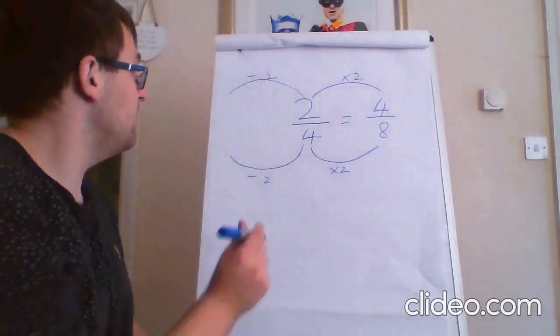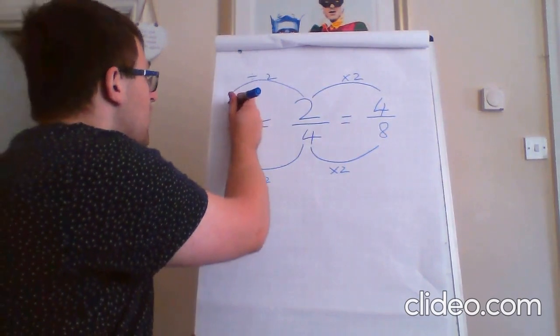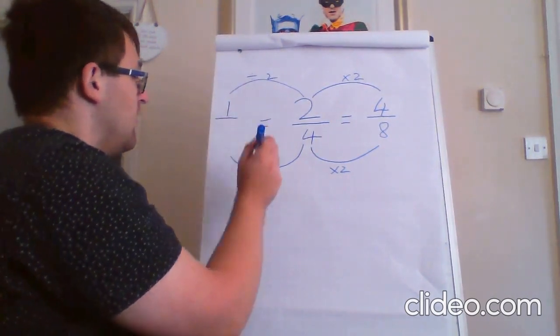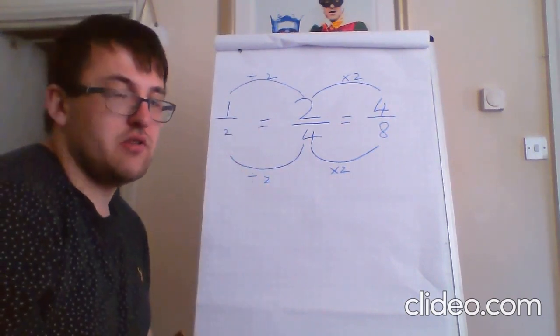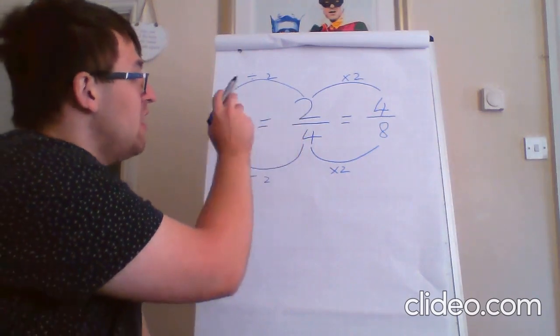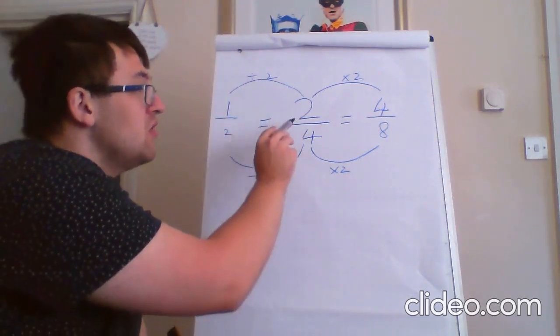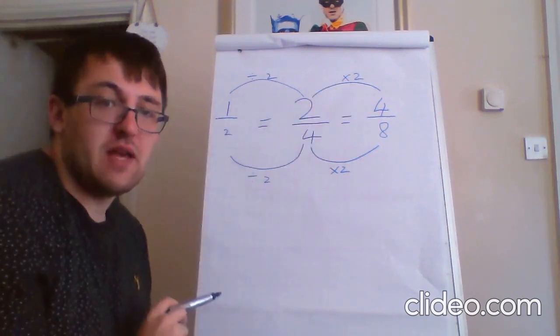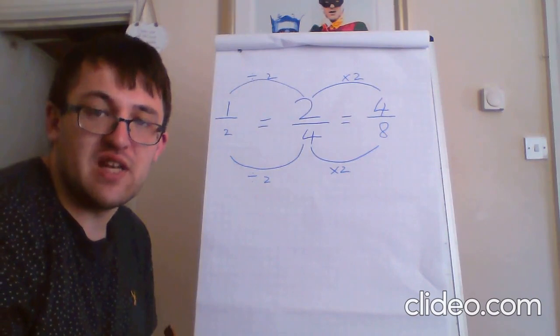And whatever we do to the numerator, we have to do to the denominator. So, that's also going to be divided by two. Two divided by two is one. Four divided by two is two. So, that means two quarters is also equivalent to a half. So, a half is the same as two quarters and the same as four eighths.